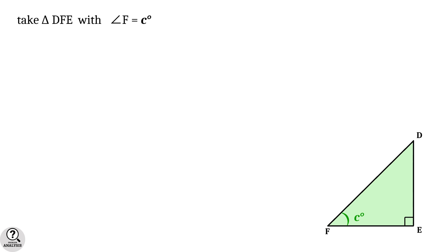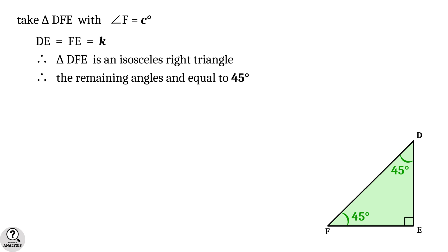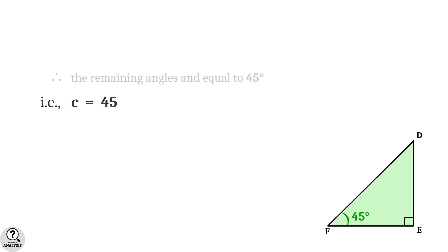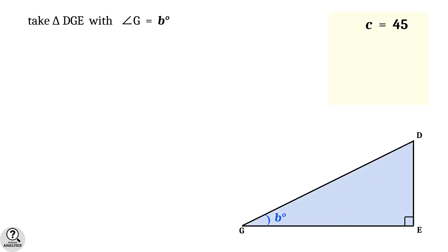Let's take triangle DFE with angle F equal to c degrees. Since the sides DF and FE are equal to k units, triangle DFE is an isosceles right triangle, which means the remaining angles are equal to 45 degrees. Therefore the value of c is equal to 45.